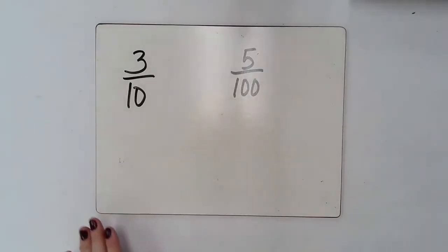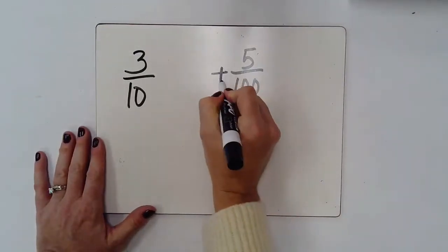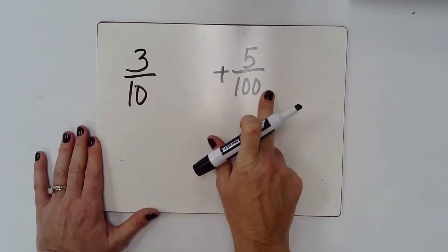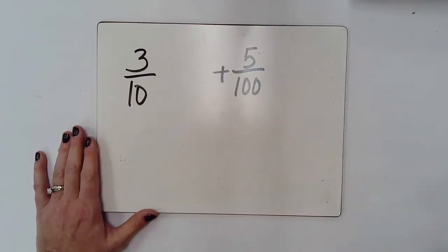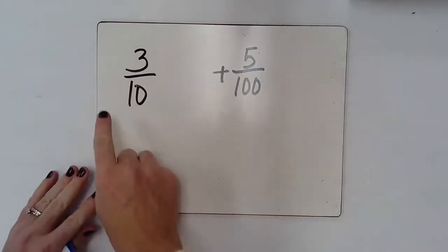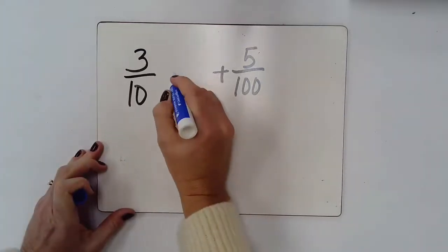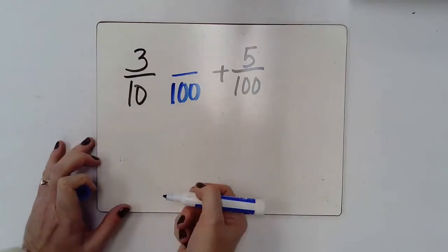So this time, if I wanted to add three tenths and five hundredths together, they need to have the same denominator to make it easier for me. So I'm going to change three tenths into having the denominator of one hundred.